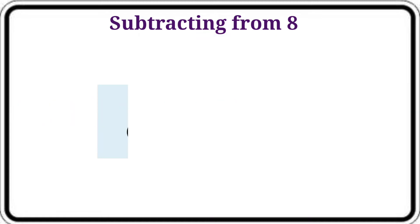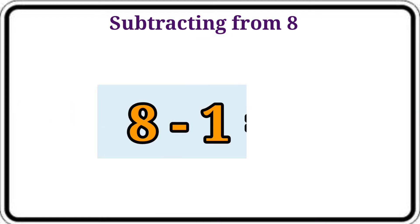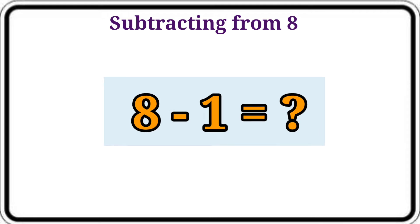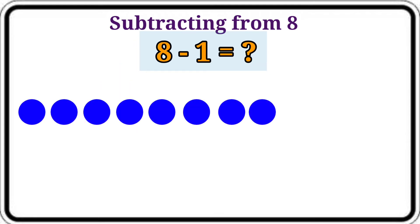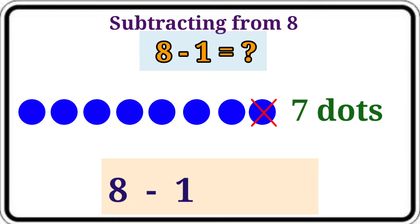Then the question is 8 minus 1. Let us count the dots that are not crossed. Here 7 not crossed dots. So the answer is 7. Write the subtraction fact: 8 minus 1 is equal to 7.